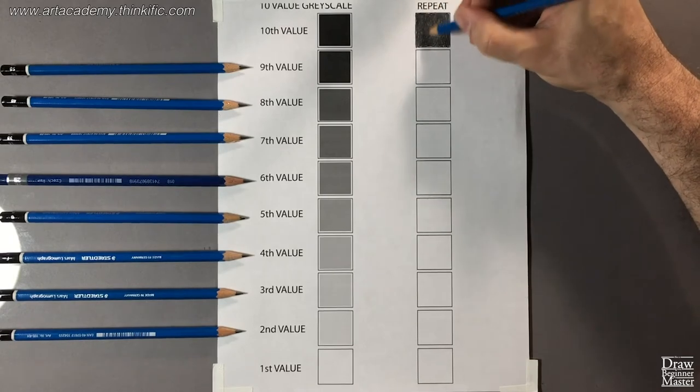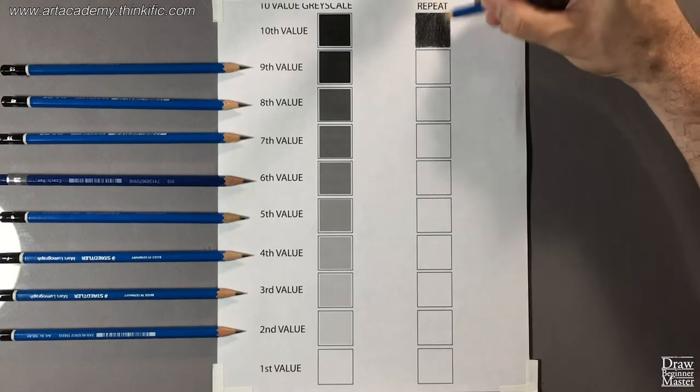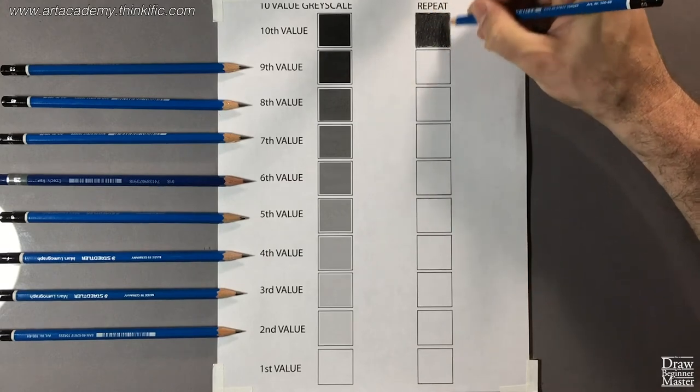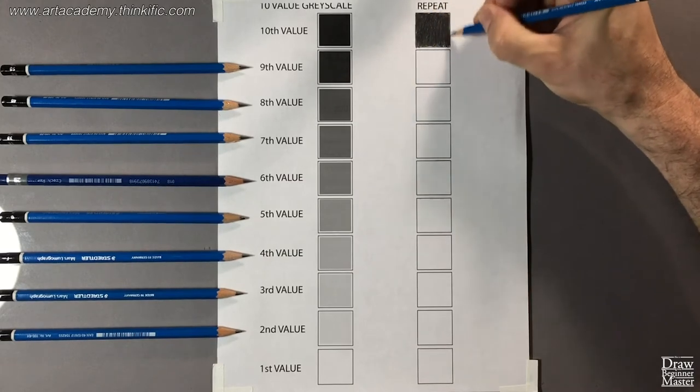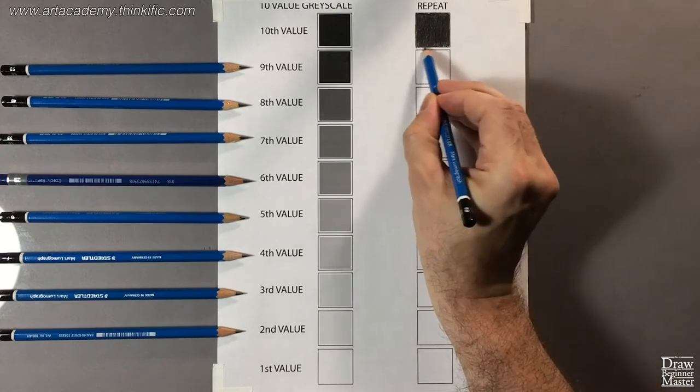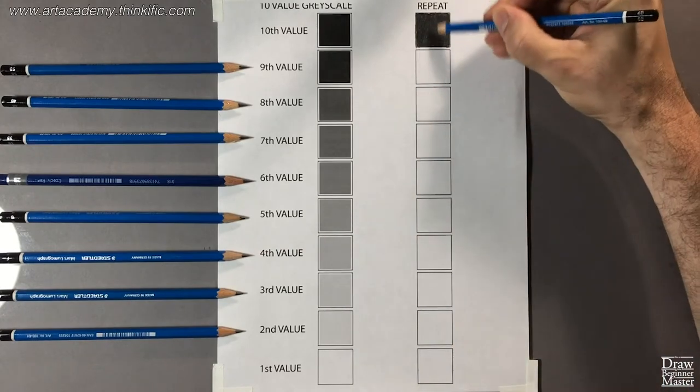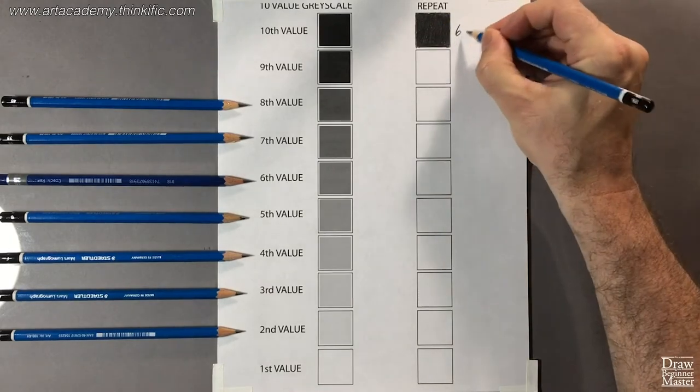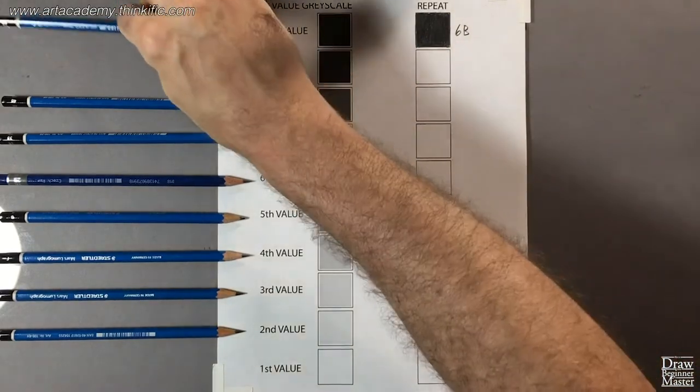Just keep going over the area, adding more pressure each time you pass. And when you're done, write the pencil lead you used next to the box.